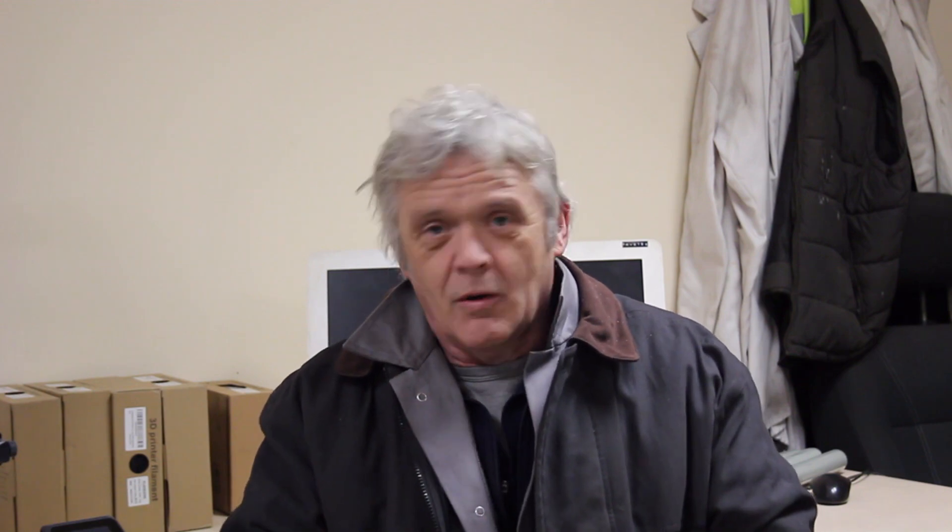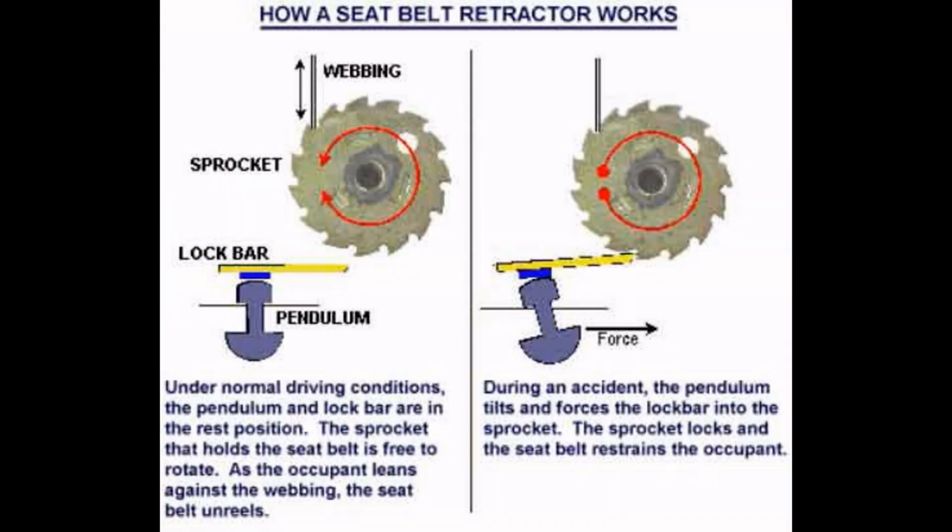Now what we're using is a ratchet and pawl mechanism and if you remember in video 1853 we talked about the ratchet and pawl. What they do these days is to have a pendulum for the pawl and as the car suddenly brakes the pendulum swings, the pawl comes into operation and locks a ratchet that prevents the seatbelt from undoing and that's the mechanism of seatbelts these days.